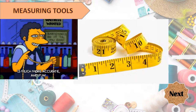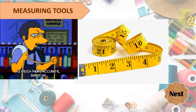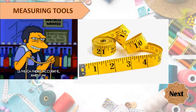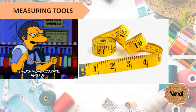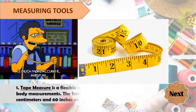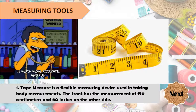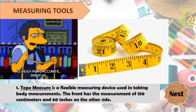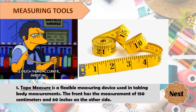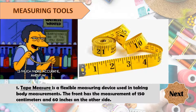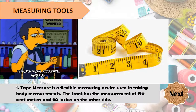Let's try to identify what measuring tool is illustrated on the picture. This is a tape measure. It is a flexible measuring device used in taking body measurements. The front has the measurement of 150 centimeters and 60 inches on the other side.